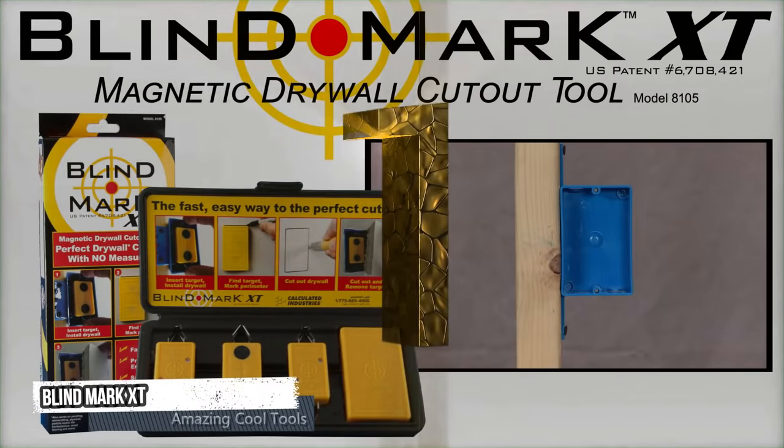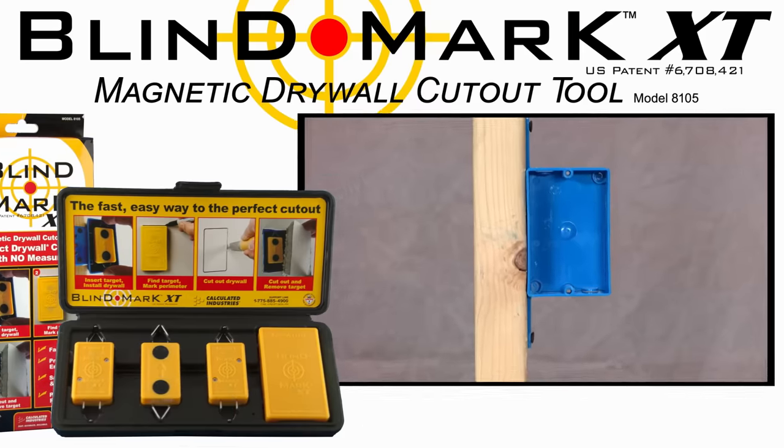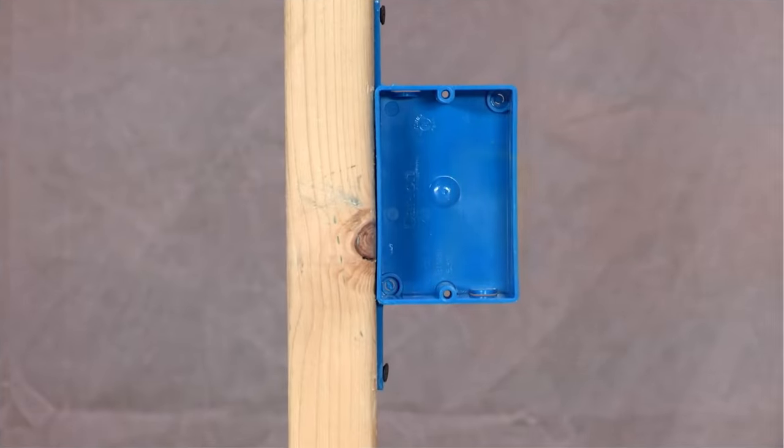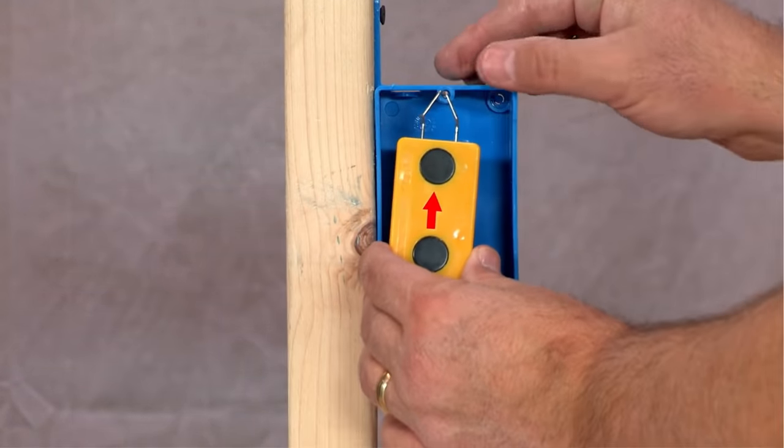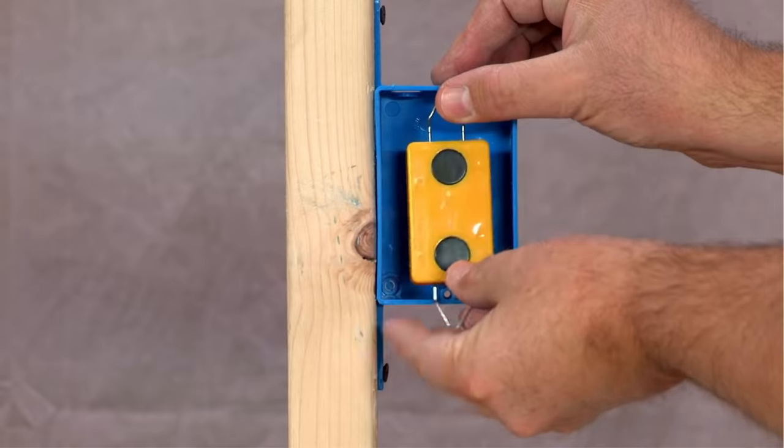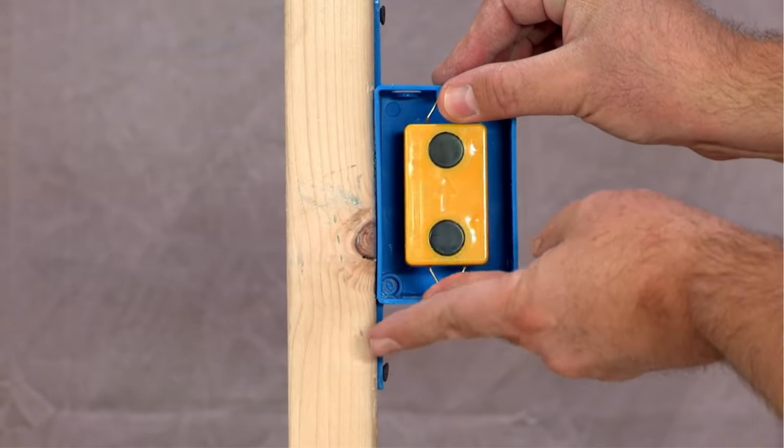The BlindMark XT kit comes with three target magnets and one locator magnet in a rugged carry-on case. To use the BlindMark XT, first insert the target magnet with the arrow pointed up in each outlet box that will be covered by the drywall.